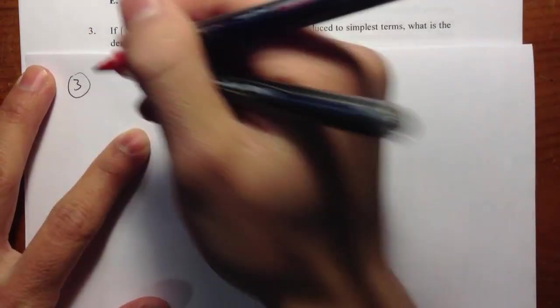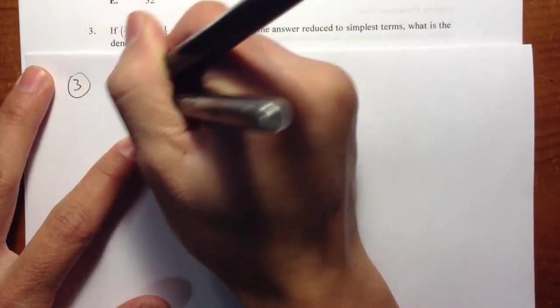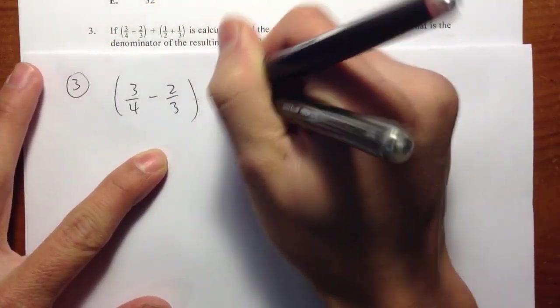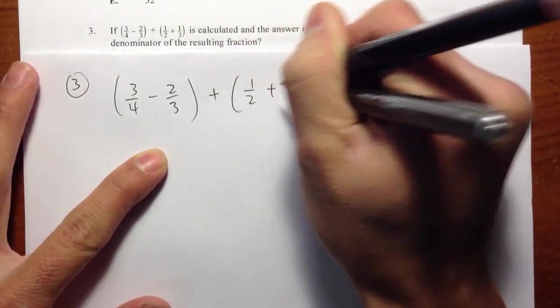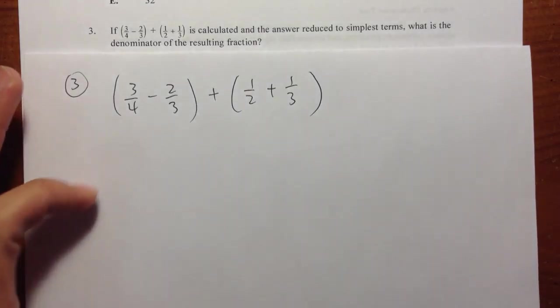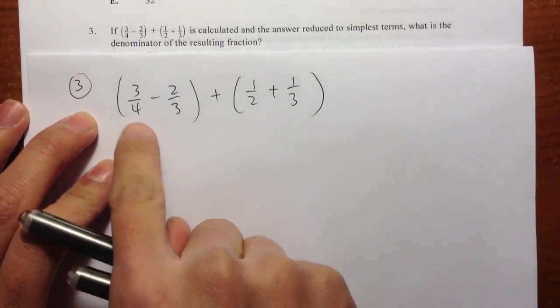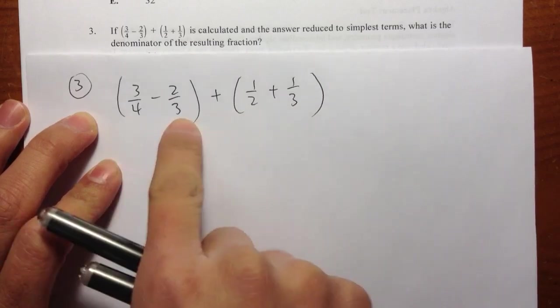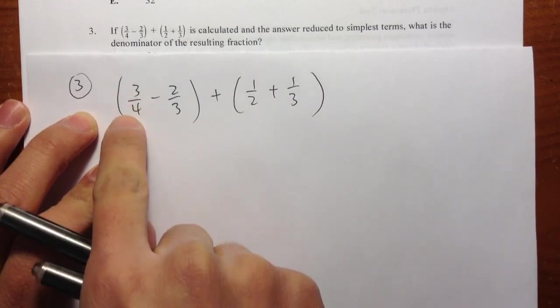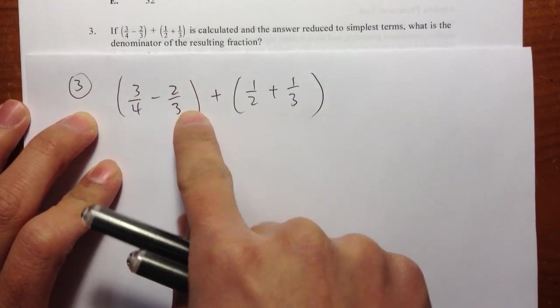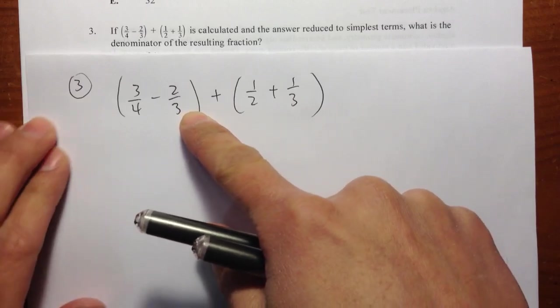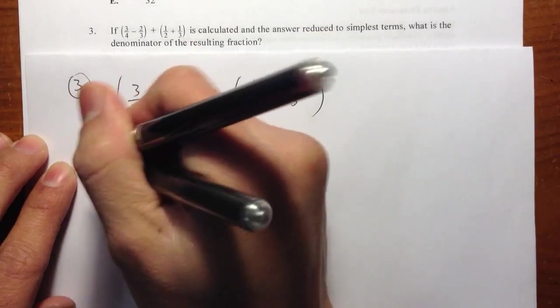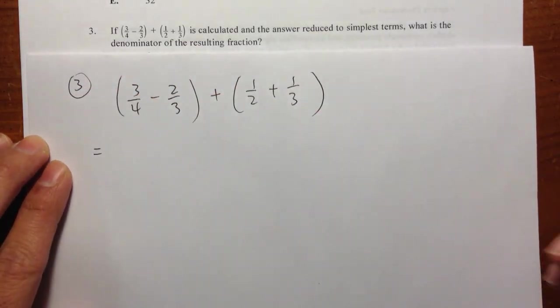So let me write it down on my paper: 3 over 4 minus 2 thirds in parentheses, plus 1 half plus 1 third. So we are just going to deal with the parentheses first. And the first parentheses, I have 3 over 4 minus 2 over 3. Unfortunately, they don't have the same denominator. So we are going to make them have the same denominator first.